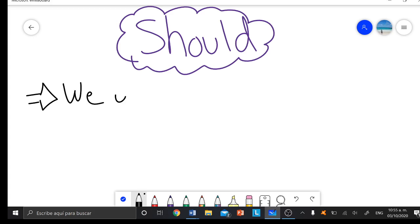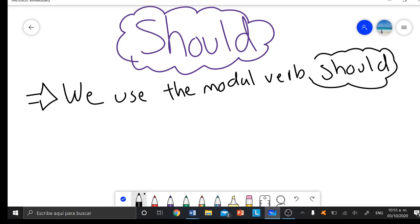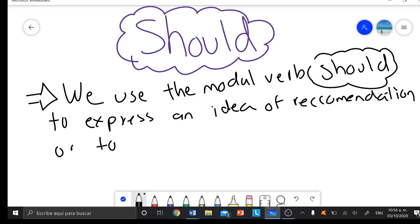We're gonna start with a very simple definition. We use the modal verb 'should' to express an idea of recommendation, or to express the idea of an opinion.